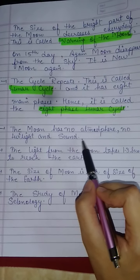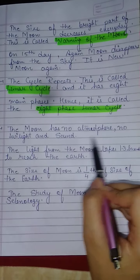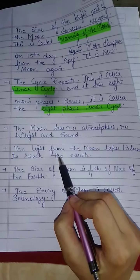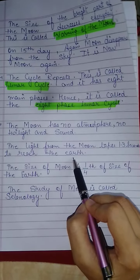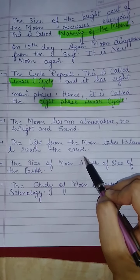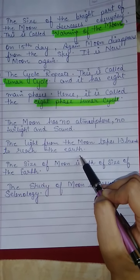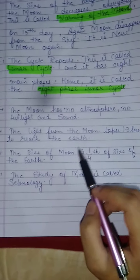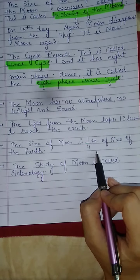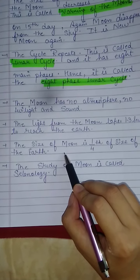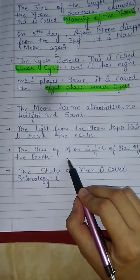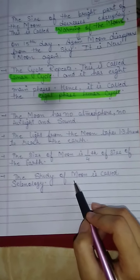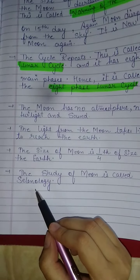The Moon has no atmosphere, no twilight, and no sound. The light from the Moon takes 1.3 seconds to reach the Earth. The size of the Moon is one-fourth the size of the Earth.